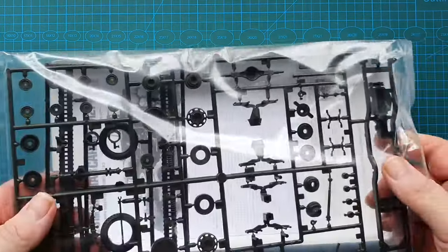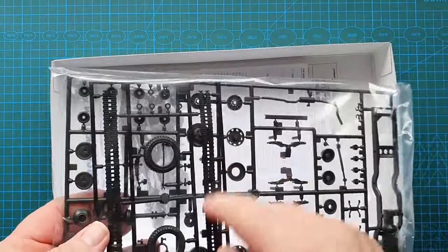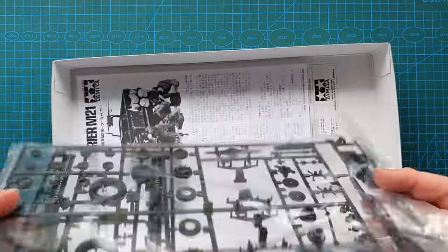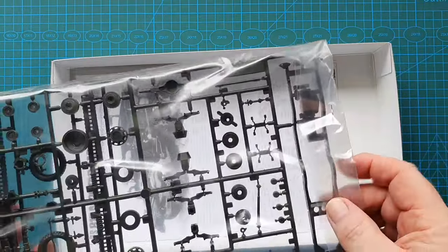And the last bag out is your vinyl tires and tracks and the chassis and running gear.